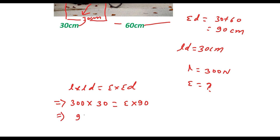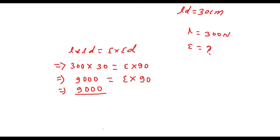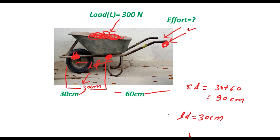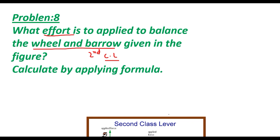So 300 × 30 = effort × 90. That gives 9000 = effort × 90. Dividing, effort = 9000 divided by 90, which equals 100. Effort means force applied, so the unit is newton. Therefore effort is 100 newton. This is the required effort. In this way we can solve any type of numerical problem related to lever just by applying the principle of lever: load × load distance = effort × effort distance.